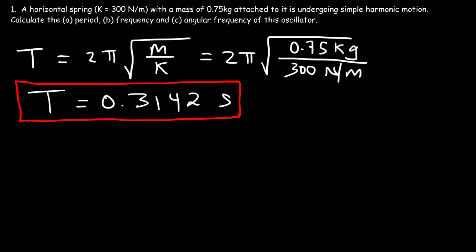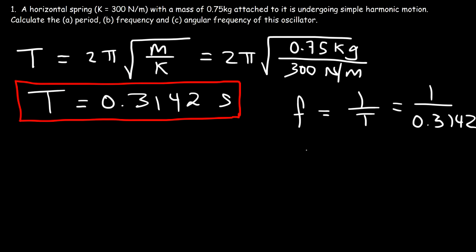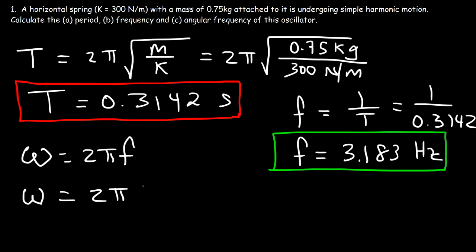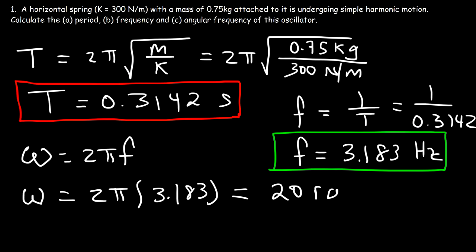Now part B, what is the frequency? Frequency is one divided by the period, so it's one divided by 0.3142 seconds, giving a frequency of 3.183 hertz. Now let's move on to part C and calculate the angular frequency. The angular frequency, represented by the symbol omega, is 2 pi times the frequency — so that's 2 pi times 3.183 hertz, which gives about 20 radians per second.